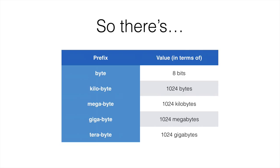So, to summarize, one byte is 8 bits. And then each of the other ones are 1024 of the one above.